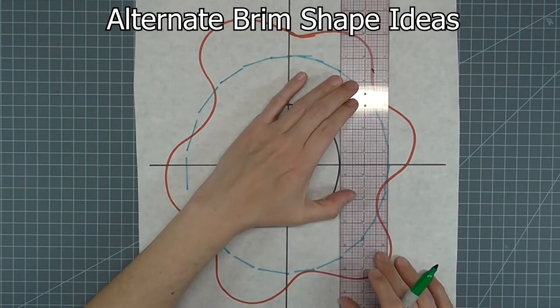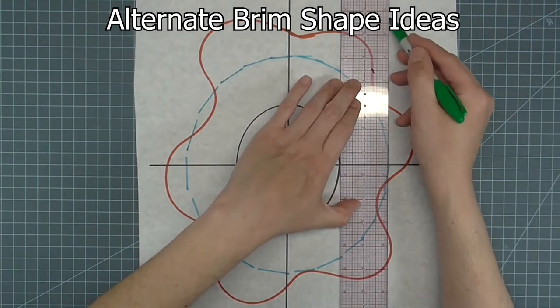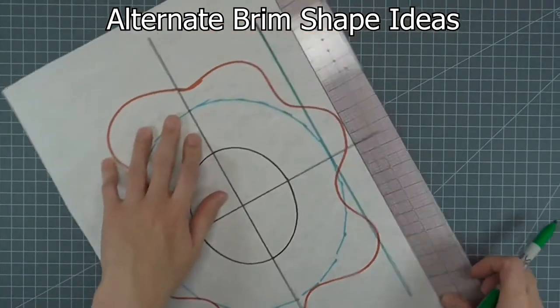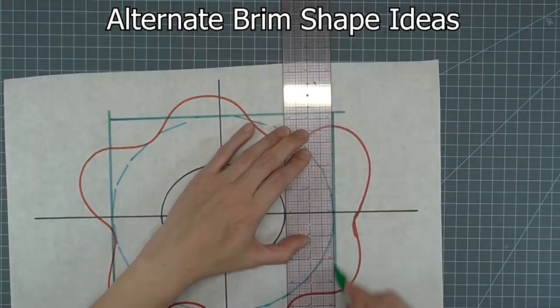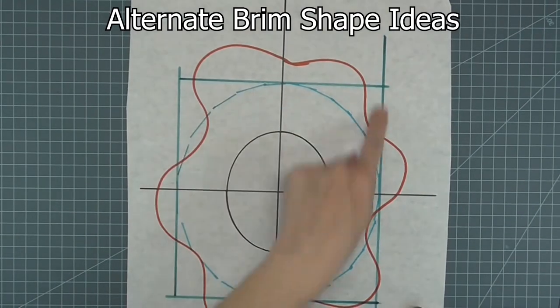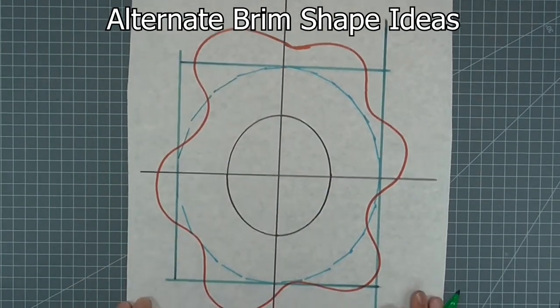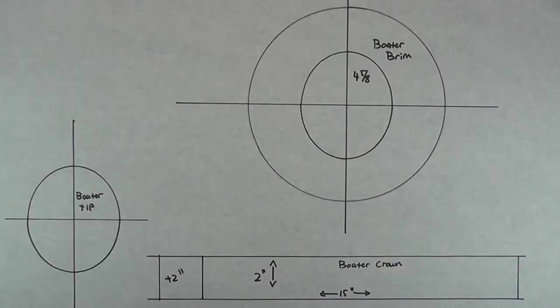If you want a square shape, draw straight lines outside of the head size shape. For my sample, this is what my draft looks like so far.